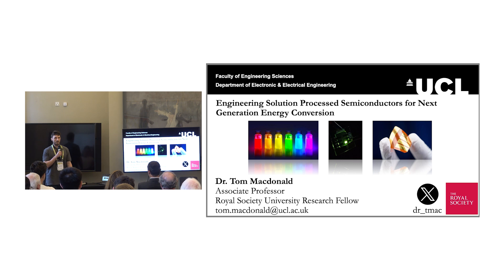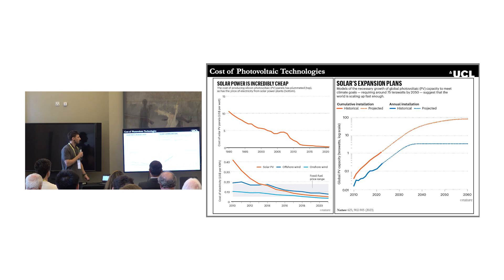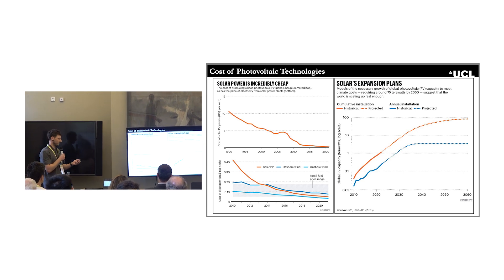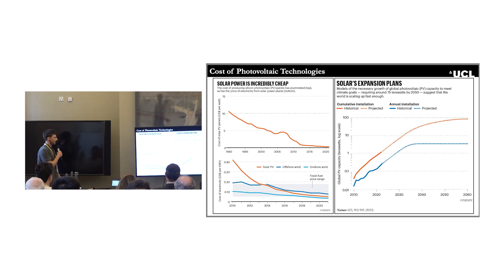I'll be talking to you about solution-processed semiconductors, namely in the form of perovskites and other types of nanomaterials that we work with, with the intention to use them for photovoltaics or solar cells. Some of you may be familiar with some of these charts, but essentially solar got really cheap. It's a good thing. We need to deploy a lot of these panels in order to reach our renewable energy targets, so it's important they are cheap and affordable.